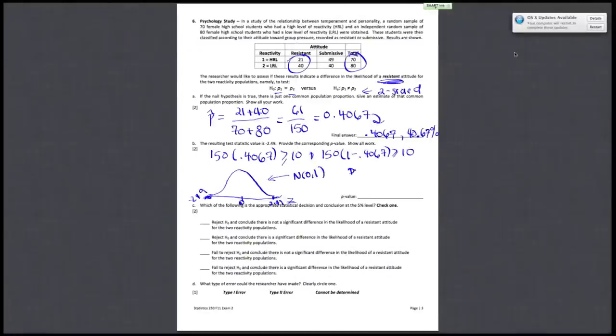So since your P-value is for both sides, your final answer is 2 times 0.0064, which should give you a final answer of 0.0128.